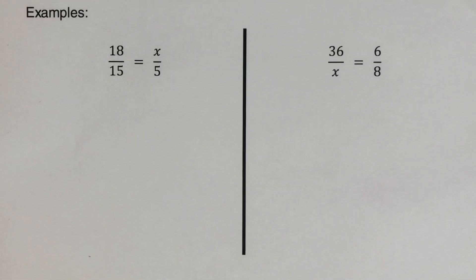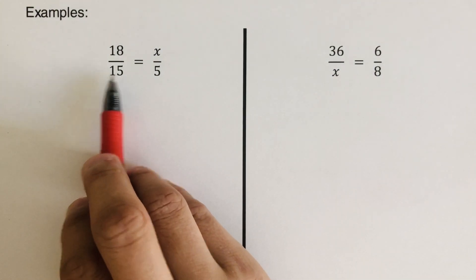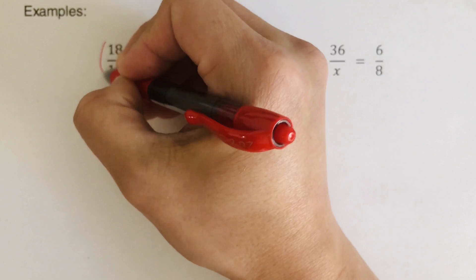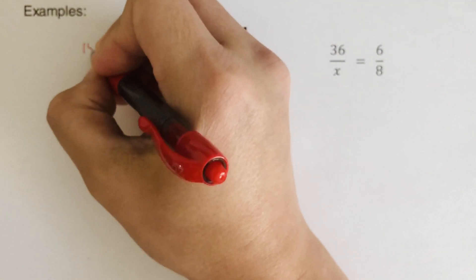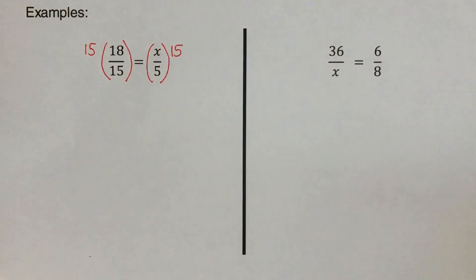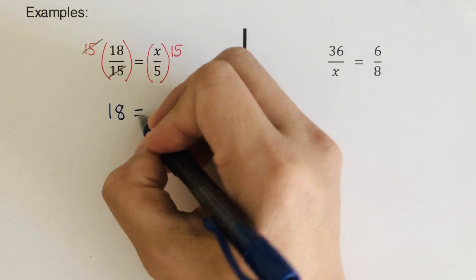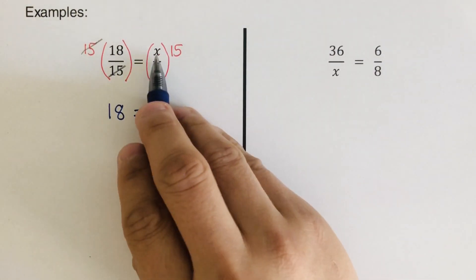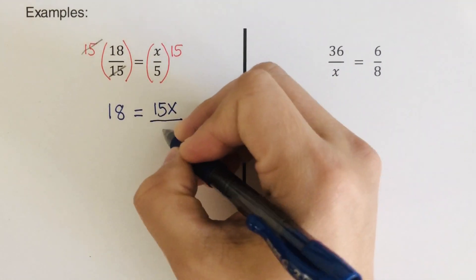We're going to go over the next problem using undoing division. Since we have 15 in the denominator, we multiply both sides by 15. Crossing the 15s out, we are left with 18 on the left side, equal to 15x over 5 on the right.